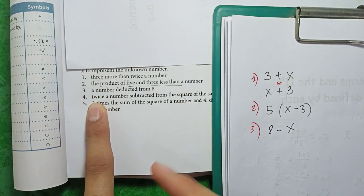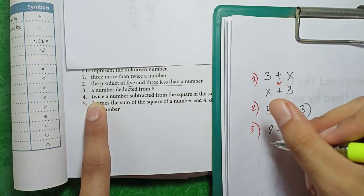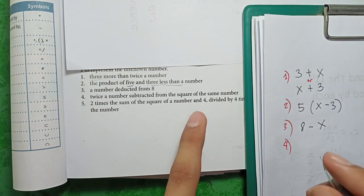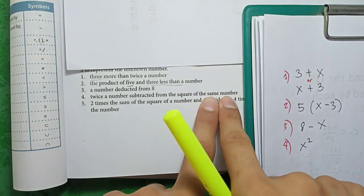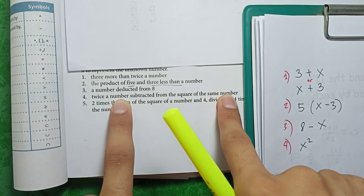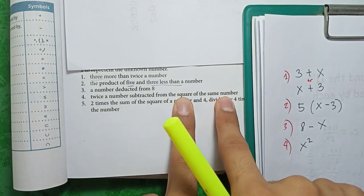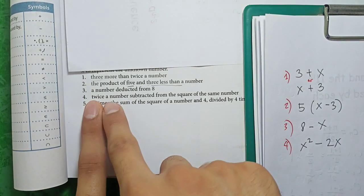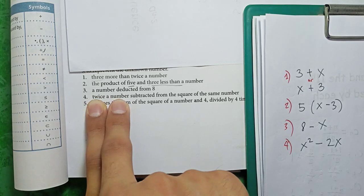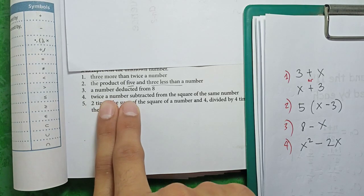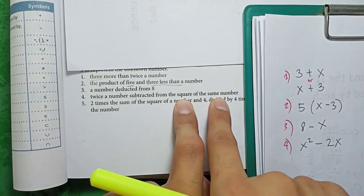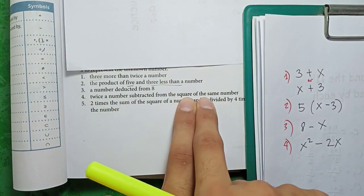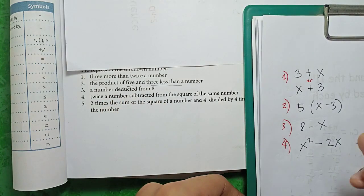Next, twice a number subtracted from the square of the same number. Again, subtracted from. Twice a number, so 2x subtracted from the square of the same number. Square of the same number, it means x squared. Same number, kung yung number dito ay x, sabi dito same number, kaya x rin to. But sinasabi x squared of the number, kaya x squared minus twice a number, 2x. As you can see, twice a number is stated first in this verbal representation, and the square of a number comes later. But since we saw subtracted from, we need to reverse that. So let's put the square of a number, or x squared, first before the 2x that actually comes first.